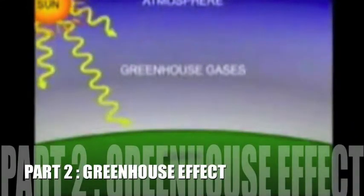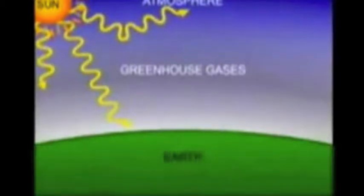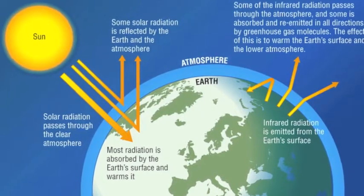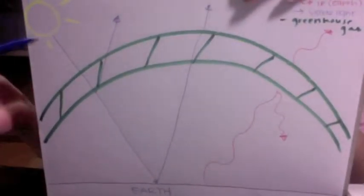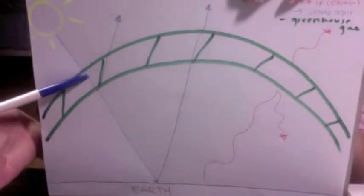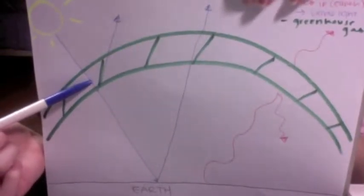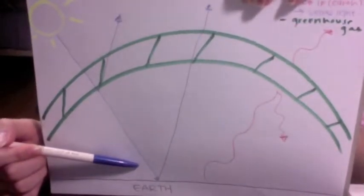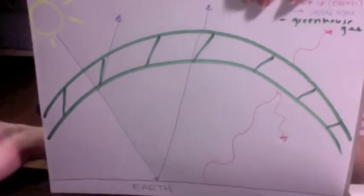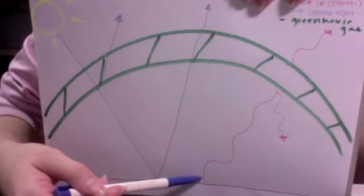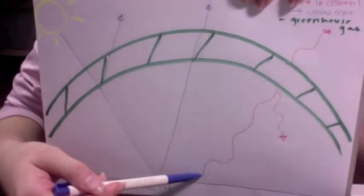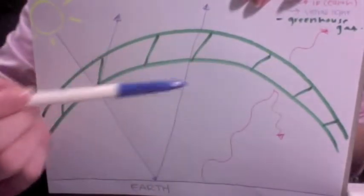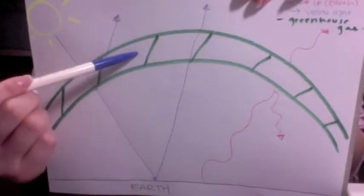The greenhouse effect is a process by which thermal radiation from a planetary surface is absorbed by atmospheric greenhouse gases and is re-radiated in all directions. We will further explain this concept with a diagram. The first step is that 50% of visible light is reflected by land, sea, or atmosphere. The second step is that the other 50% of visible light is absorbed by the land and sea. The third step is that visible light is released by the earth as IR, while some of this IR goes out to space and other IR is absorbed by greenhouse gases.